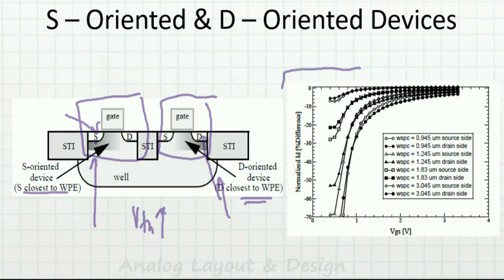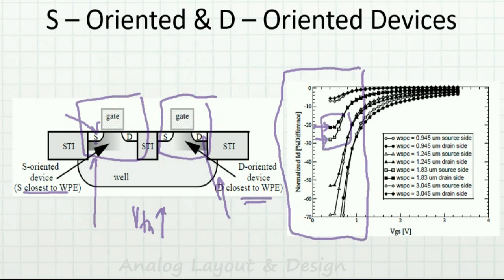Looking at this portion of the diagram, there is a difference of around 8% between the source-oriented and the drain-oriented device. If it is source-oriented, the current carrying capacity would be higher; if it is drain-oriented, it would be slightly lower. Both have the WPE effect, but there is an 8% difference between them.